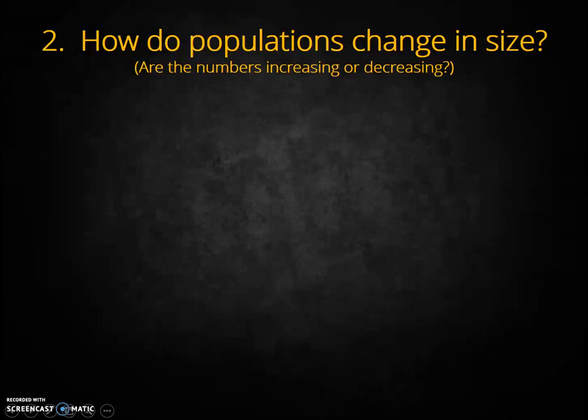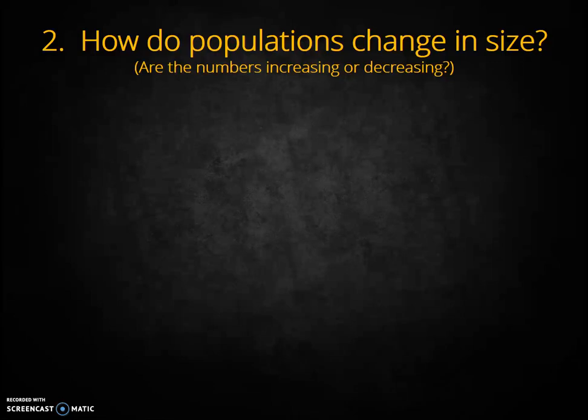Another fundamental question population ecologists ask is whether population numbers are changing and how they are changing. Is the population growing or declining? How rapidly? What factors are playing a role? We discussed population growth when we were studying human populations — the same models apply for other species. Let's review.